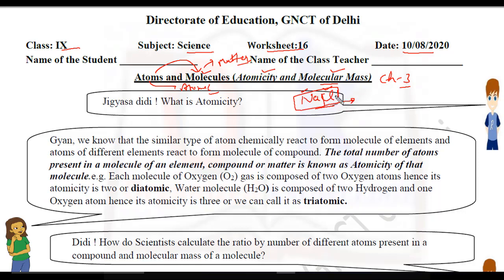Let's start. What is atomicity? Atomicity is the number of atoms in a molecule — in a compound, in matter — how many number of atoms are there. For example, if we take sodium chloride, how many atoms are present? There is one sodium and one chlorine.